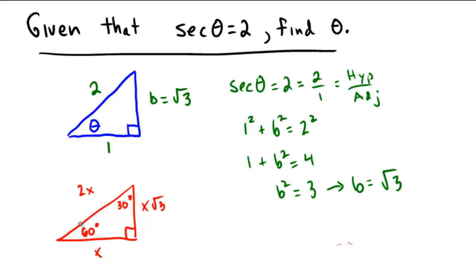So the final answer for this problem is to find theta. Well, what is theta? Theta would be equal to a 60 degree angle, or if you are in radian mode, that would be a pi over 3 radian measure. So the angle is either 60 degrees or pi over 3 radians.